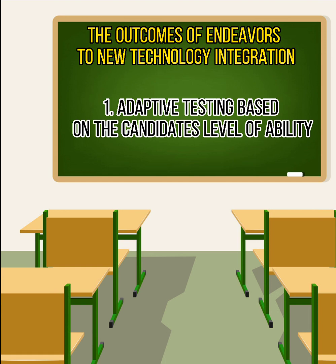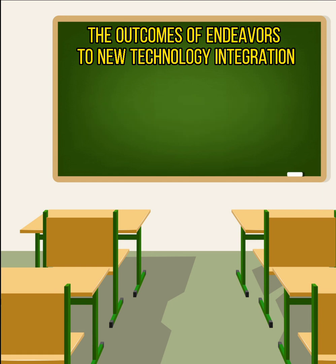Number one is adaptive testing based on the candidate's level of ability. CAT, or computer-adaptive testing, is based on tailoring test questions to each candidate's level of ability. CAT is currently available in listening and reading tests. It provides questions based on the candidate's level of performance, giving candidates a more positive experience by reducing anxiety, since an adaptive test targets language skills associated with a specific level of ability. It is commonly shorter than paper-based linear tests and can offer immediate results by the end of the test.